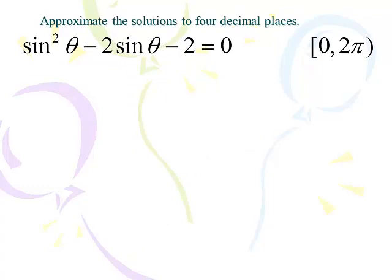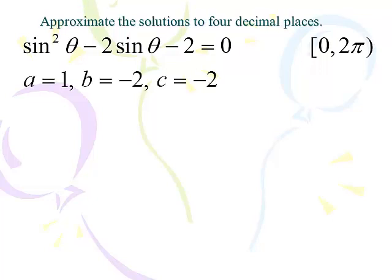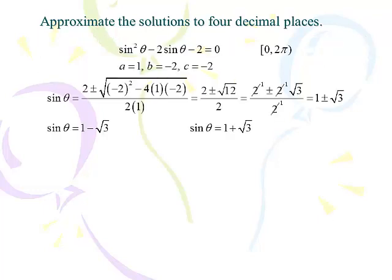Next: sin²θ − 2sinθ − 2 = 0. We want all answers between 0 and 2π. First thing you try to do is factor it, but it won't factor. So a is 1, b is negative 2, and c is negative 2. Now let's do the quadratic formula: negative b plus or minus the square root of b² minus 4ac, all over 2a.